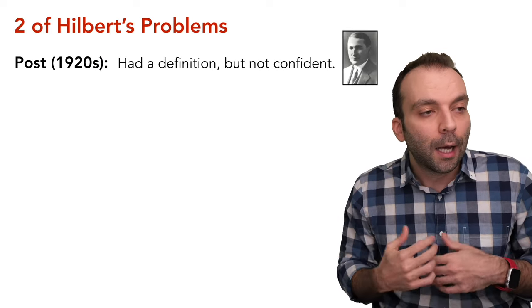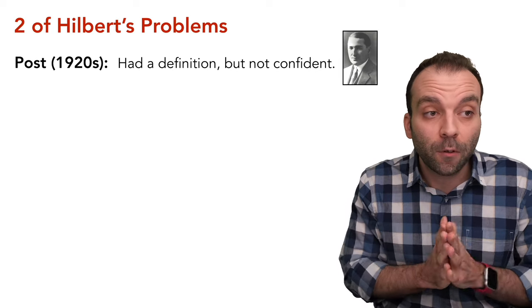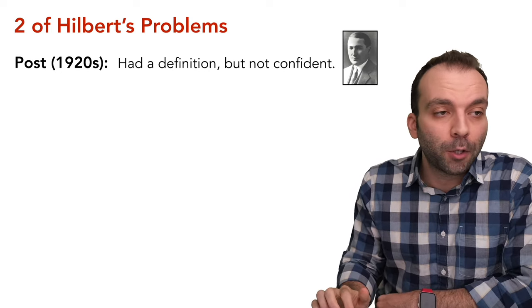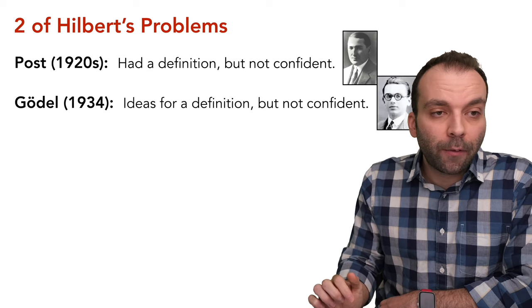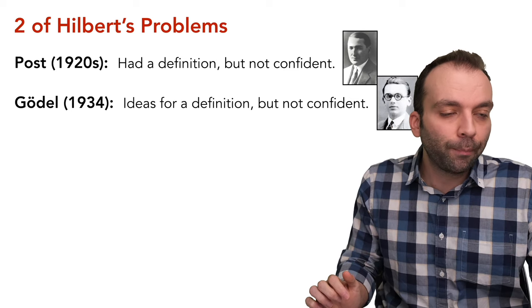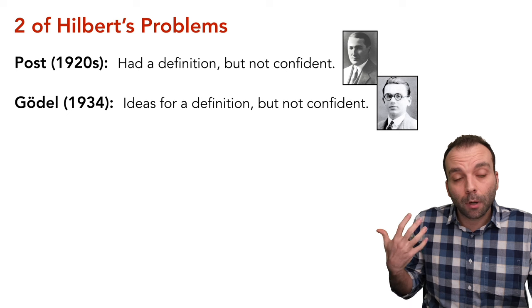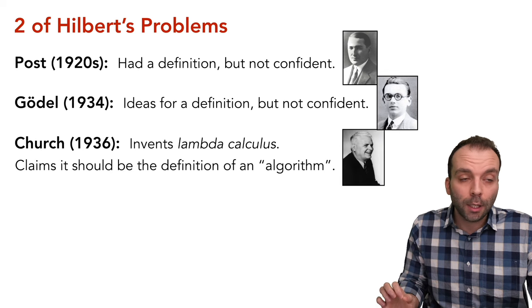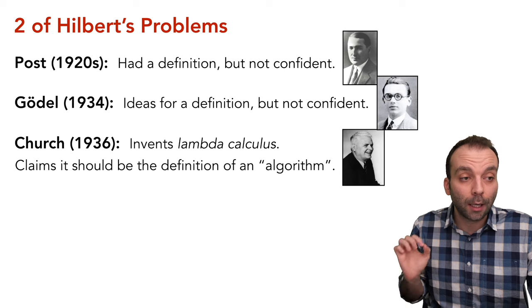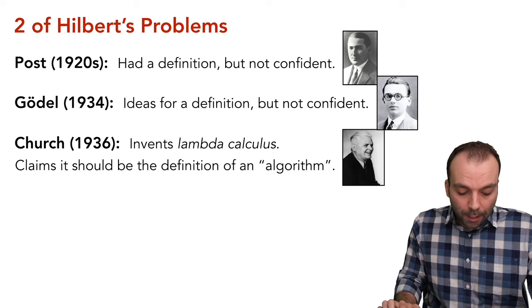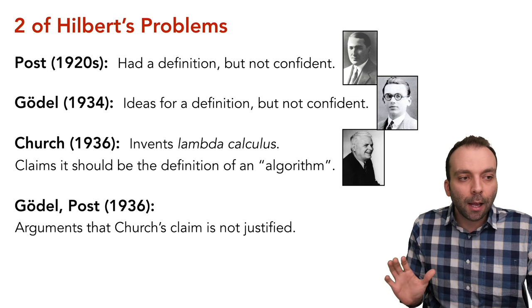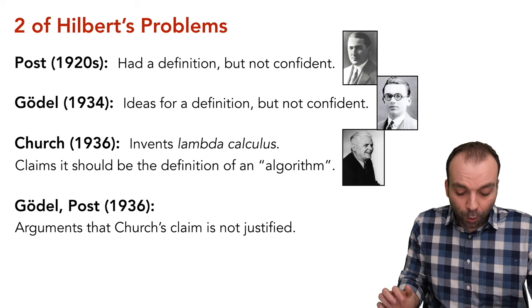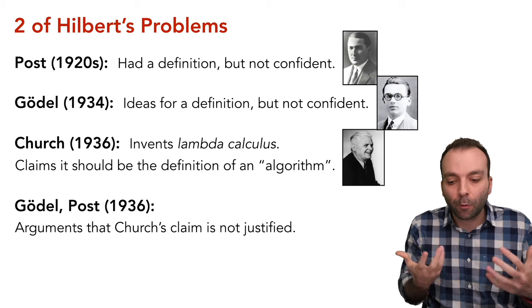Various people worked on defining computation. Emil Post in the 1920s had some definitions but wasn't confident enough to publish. Kurt Gödel had ideas but also wasn't confident he had a good definition. Alonzo Church in 1936 invented lambda calculus and claimed it should be the definition of an algorithm, but other mathematicians didn't find his claim very convincing or well-justified.